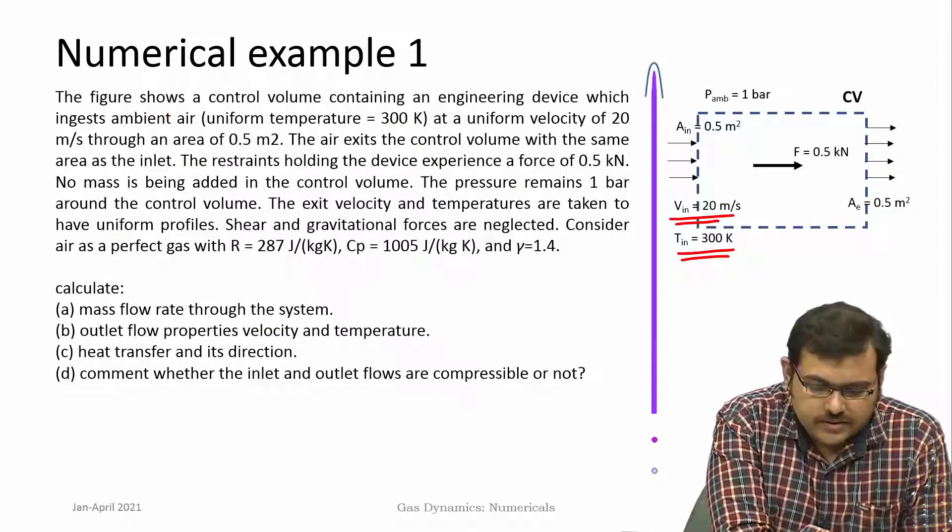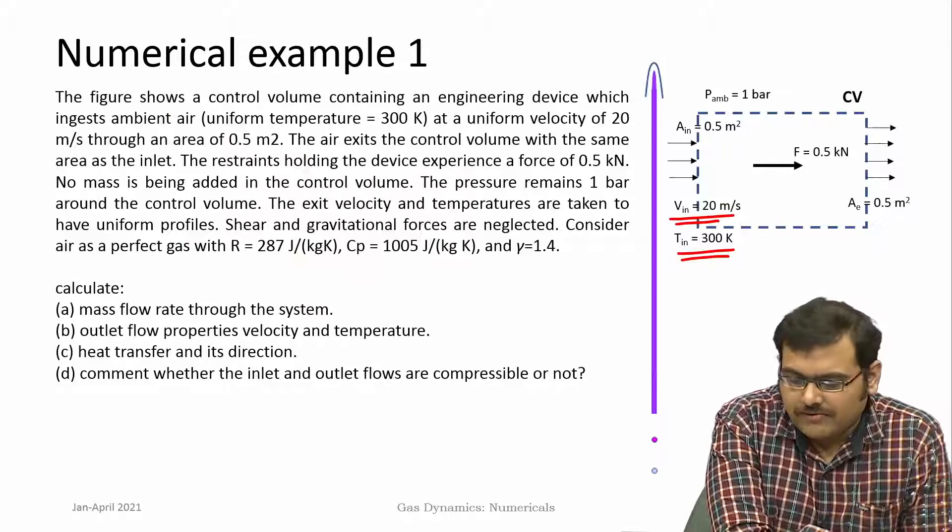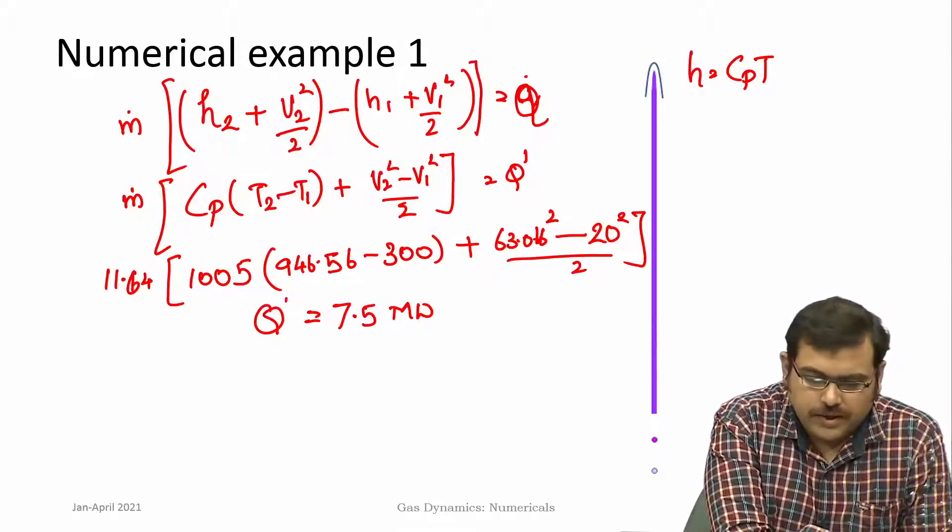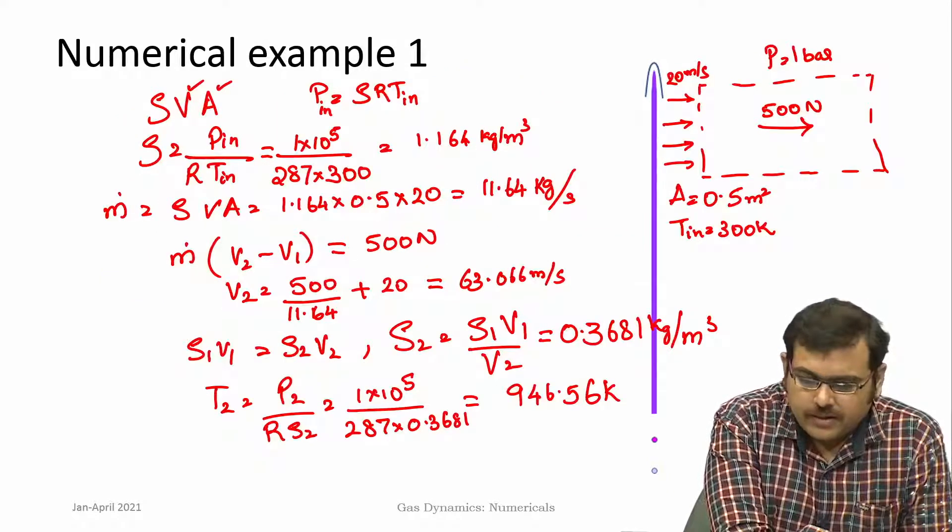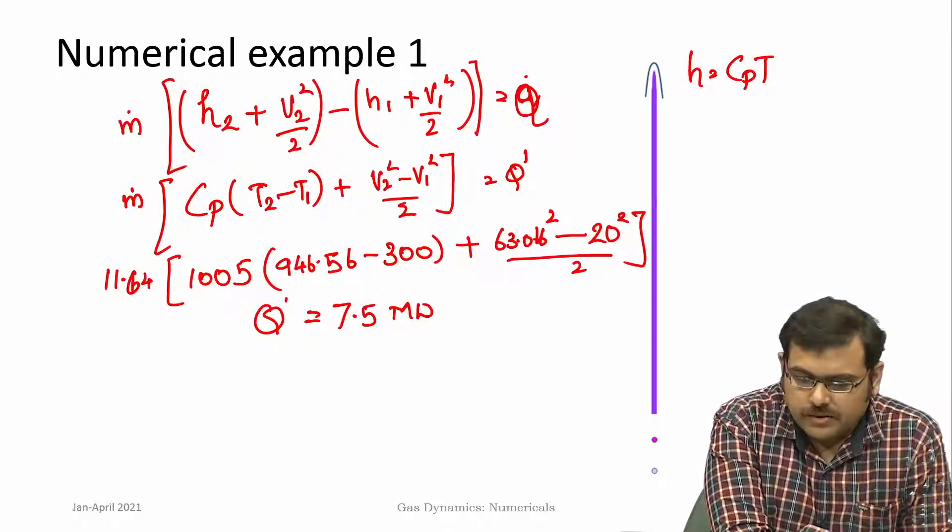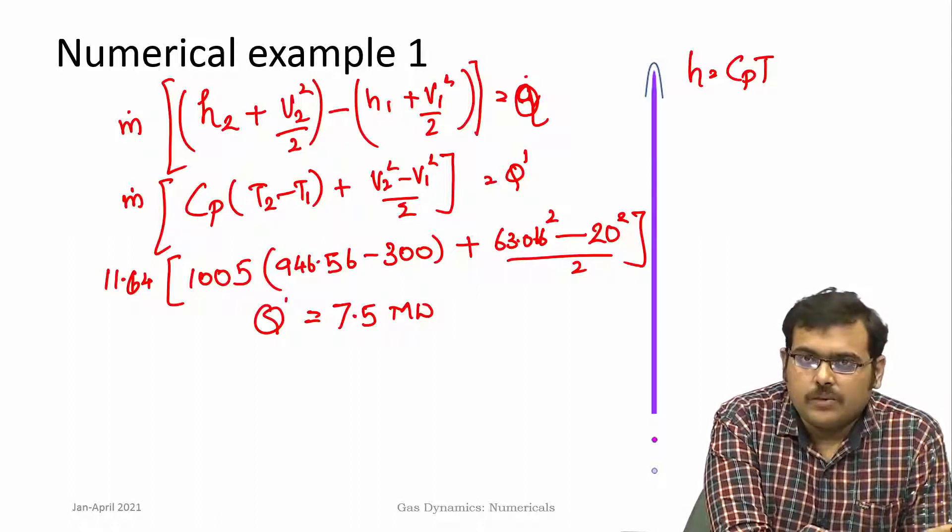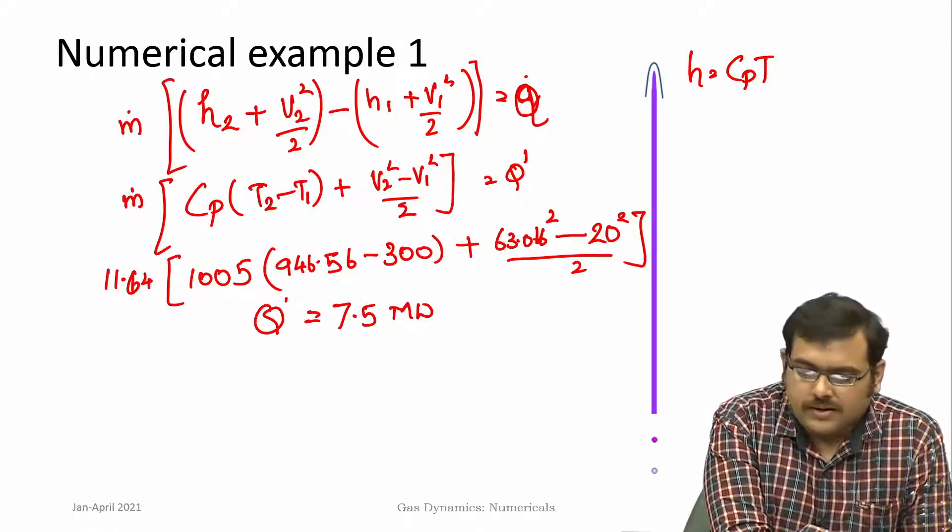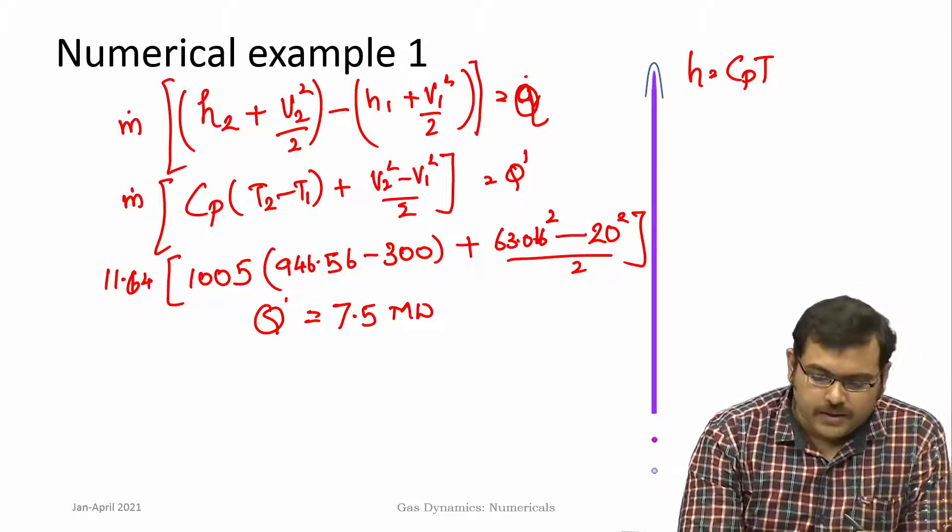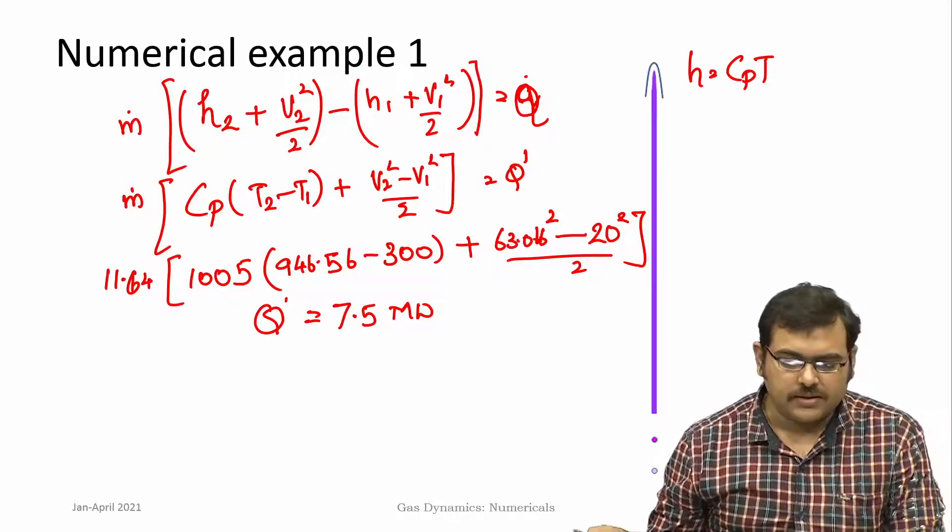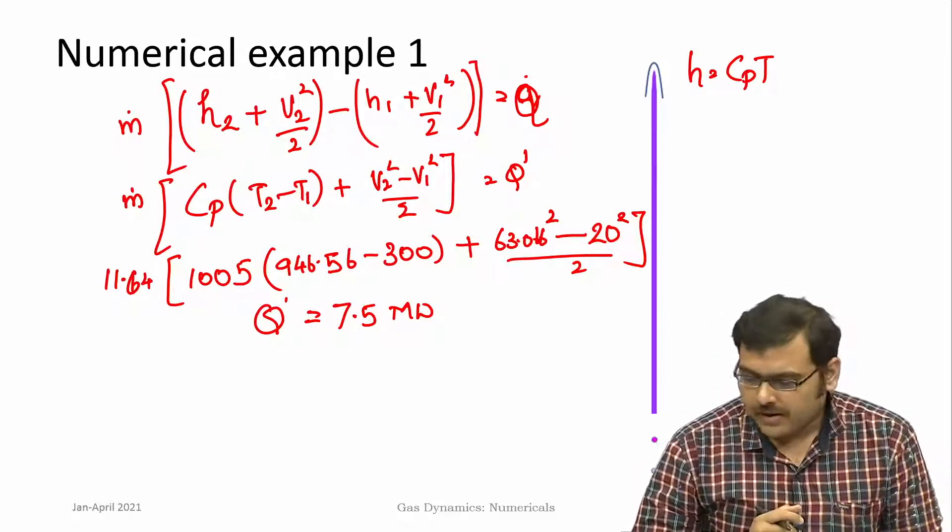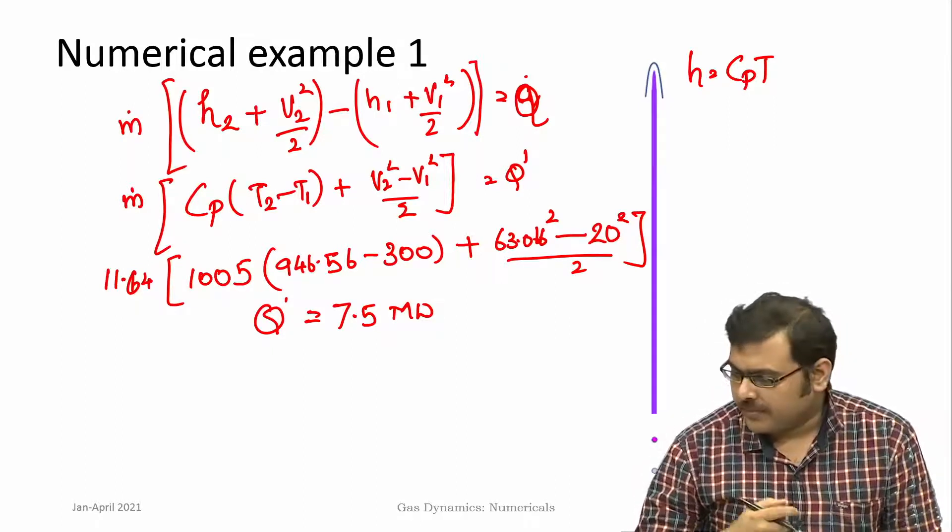The next question here is comment whether the inlet and outlet flows are compressible or not. This is a variable density flow because density is changing from section 1 to section 2. But how do you decide whether the flow is compressible or not? That has to be done by calculating the Mach number. As we had said in our initial classes, compressibility effects become important once Mach numbers become greater than 0.3.